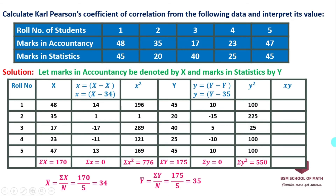Next, we compute the xy column by multiplying small x and small y for each row. For example, 1 multiplied by minus 15 gives minus 15, another gives minus 17, another gives plus 5, and minus 85 for another. We multiply each pair of small x and small y values.